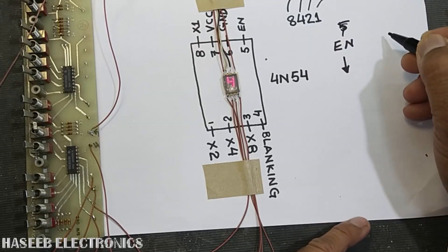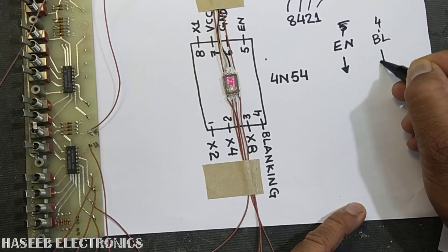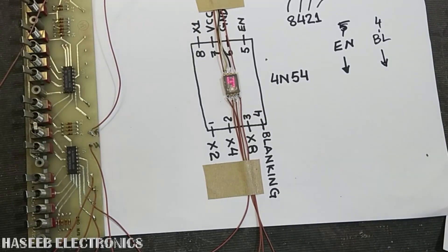Then we have the blanking pin, that is pin number 4. If it is low, it will allow to display the data. Let's try it.